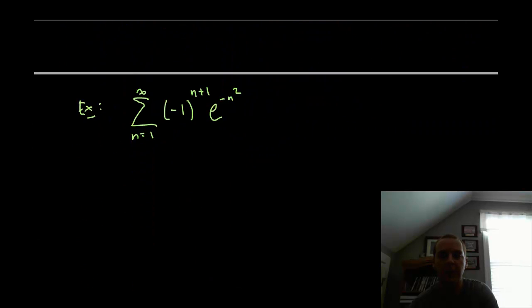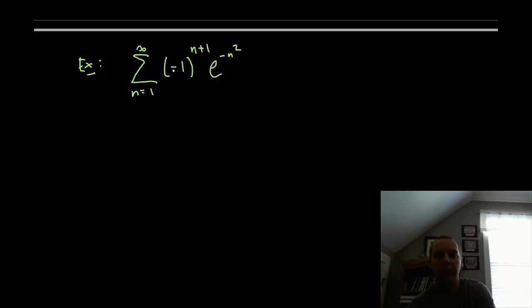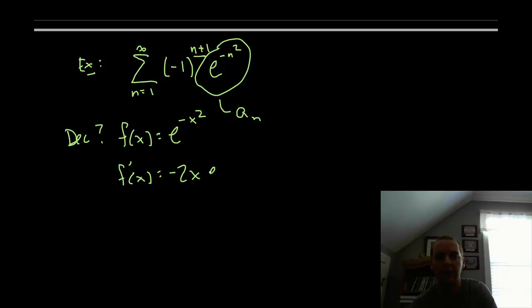Alright let's finish up with one last quick example. Here we have the sum negative one to the n plus one e to the negative n squared. So I'm going to treat this, everything other than the alternating part as a sub n. I threw in an n plus one just to illustrate the fact that it doesn't matter which one you have. To see that if you just factored out one term of negative one and stuck it on the outside pulled it out of the series then it's back to negative one to the n and we're fine. So let's see if it's decreasing first. I'll write this as f of x equals e to the negative x squared.